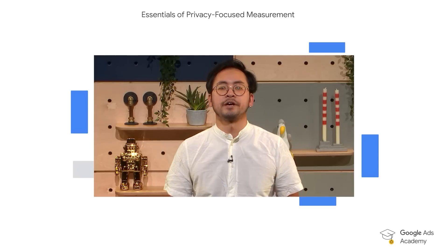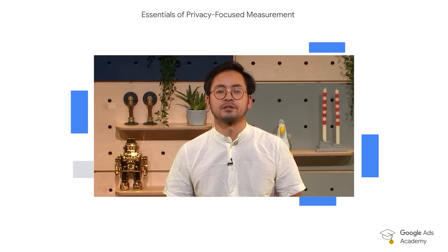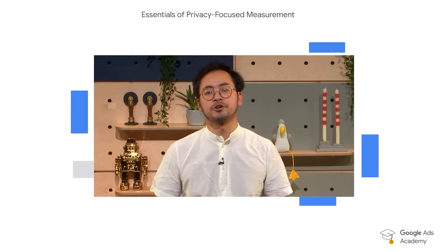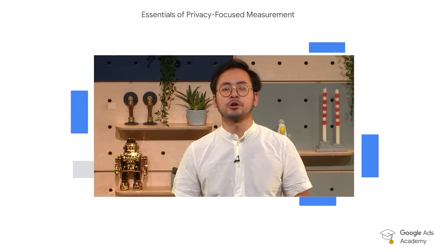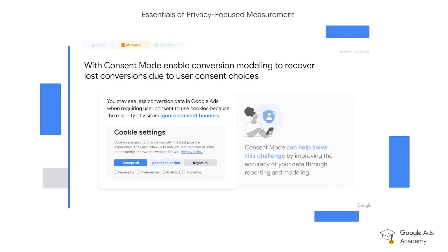Consent Mode, on the other hand, will help you navigate the regulatory side of things. Through conversion modeling, you'll be able to recover loss of conversions due to user consent choices. Operating in the EU or the UK, you're required to obtain consent from your users to store the data. This can either be done through a third-party consent management platform or through an in-house solution. Either way, you'll want to implement Consent Mode.